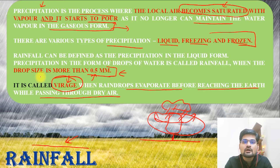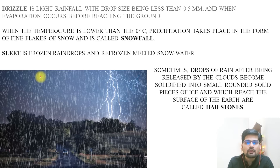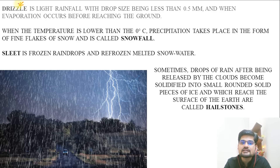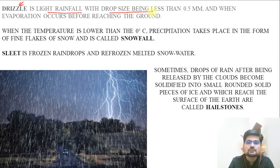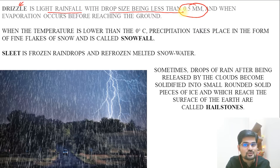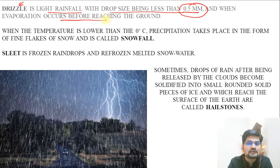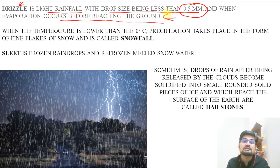Another important term is drizzle. We often use this word when rainfall is slightly slow or light. Drizzle is light rainfall with drop size being less than 0.5 millimeters. Remember, the threshold value for rainfall is 0.5 mm — if the drop size is less than that, it is drizzling. When evaporation occurs before reaching the ground, that is also part of drizzling.